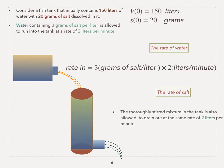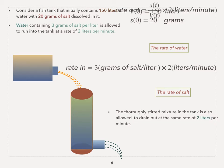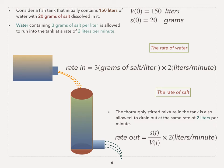How about rate out? So the next sentence is talking about the rate out. The mixture in the tank is also allowed to drain out at the same rate of 2 liters per minute. How can we find rate out? Similar to rate in, it's a product of the rate of salt and the rate of water.